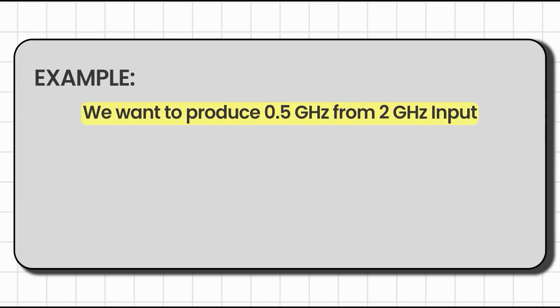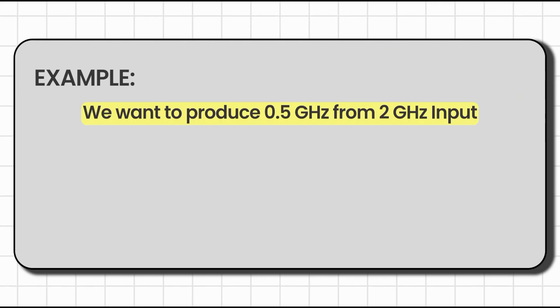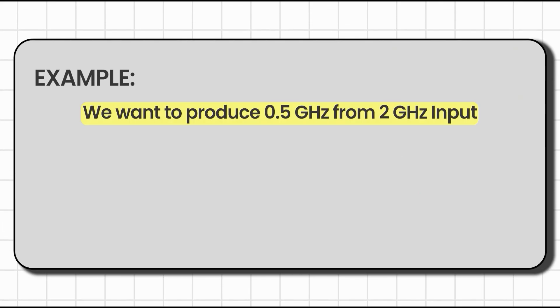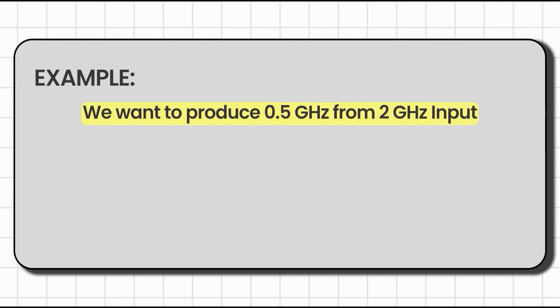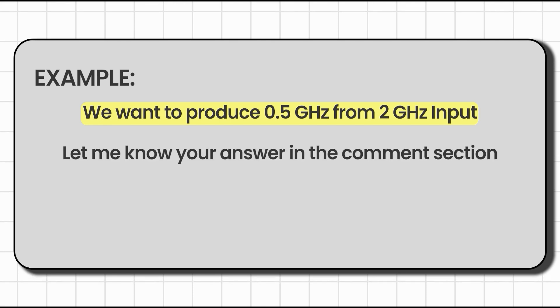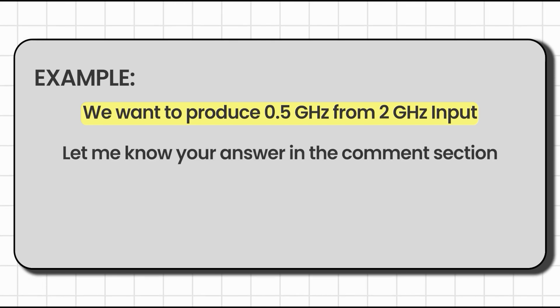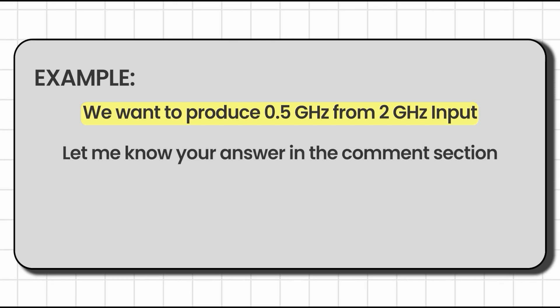Here's another example: say we want to produce 0.5 GHz from a 2 GHz input. Let me know in the comments what the LO frequency would be.